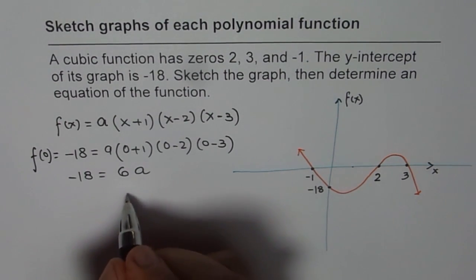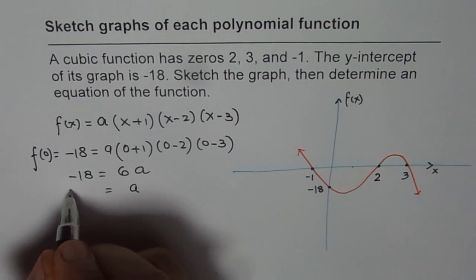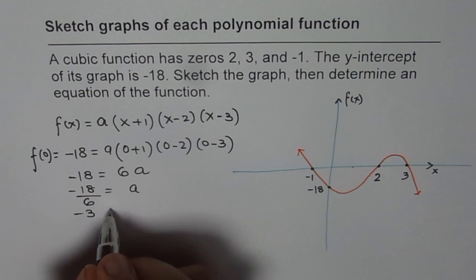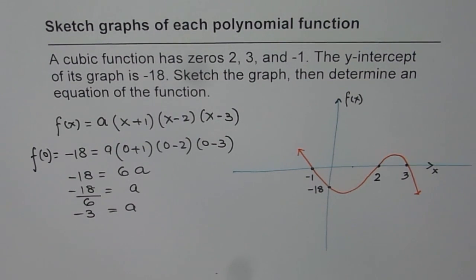Now, A is how much? A will be minus 18 divided by 6, which is equal to minus 3. So, A is minus 3. Since A is minus 3,